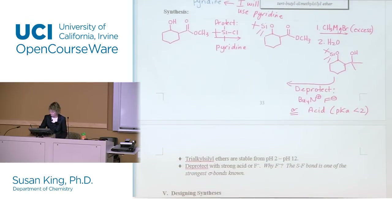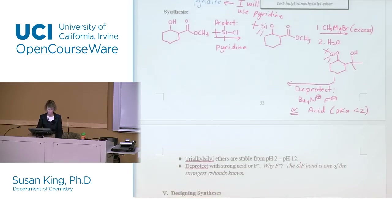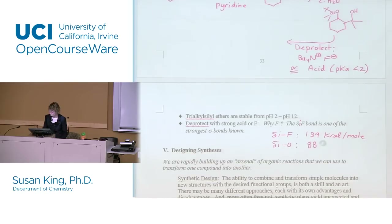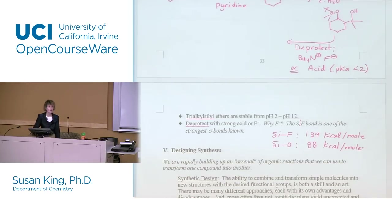Trialkyl silyl ethers are stable from pH 2 to pH 12 and are deprotected with strong acid or fluoride ion (F⁻). Why F⁻? The silicon-fluoride bond is one of the strongest sigma bonds known: Si-F is 139 kcal/mol versus the silicon-oxygen bond at 88 kcal/mol. So using fluoride ion is a great way to deprotect. That's our protecting group for alcohols. In Chapter 21 we're going to talk about a protecting group for ketones and aldehydes — those are the only two we'll cover in this class.